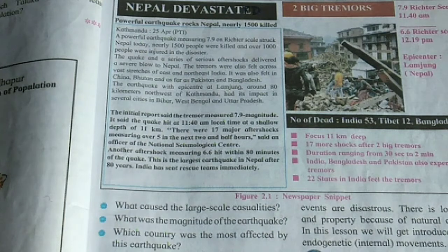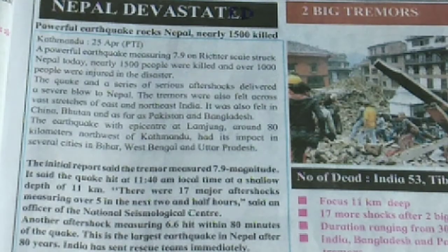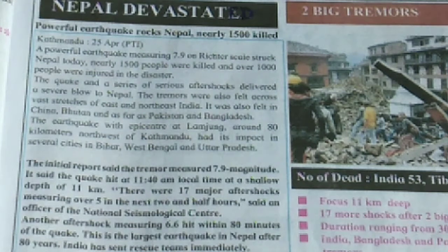Nearly 1500 people were killed and over 1000 people were injured in the disaster. The quake and a series of serious aftershocks delivered a severe blow to Nepal. The tremors were also felt across vast stretches of east and northeast India, and also in China, Bhutan, and as far as Pakistan and Bangladesh. The earthquake had its epicenter at Lamjung, around 80 km northwest of Kathmandu.